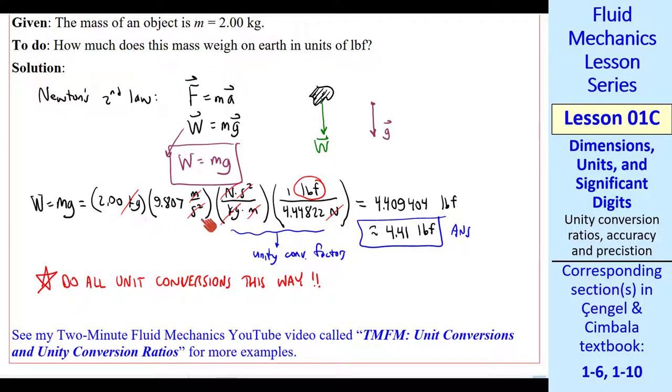We'll talk about significant digits shortly. Notice that these two are unity conversion factors. Do all unit conversions this way, using unity conversion factors, and you'll never go wrong. Also, always write your units in all your equations. Make sure the units cancel out properly to get the final answer. There are many occasions when I've found a mistake in my equations or something I wrote down because of units.